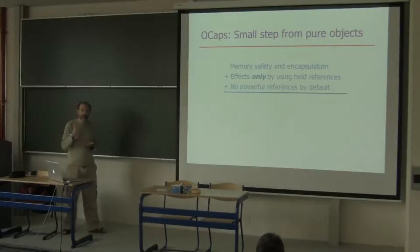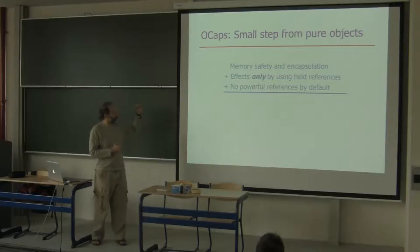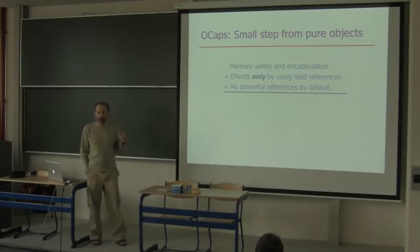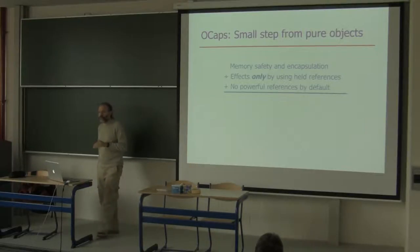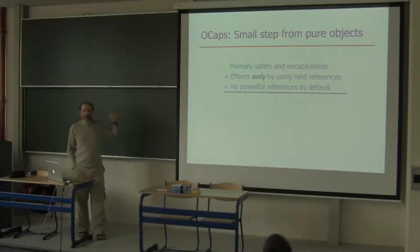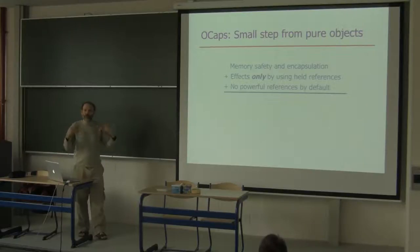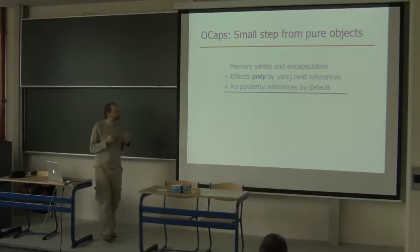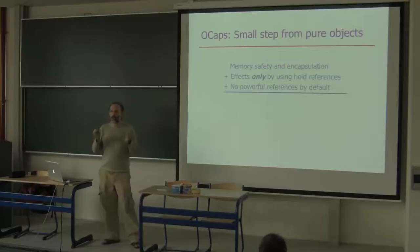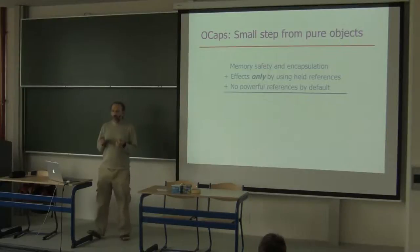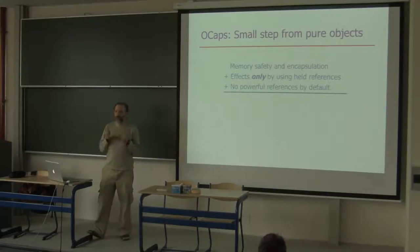To these two elements, we need only add two further restrictions to get from objects to object capabilities: first, that an object can only cause effects outside of itself by using references that it holds; and second, that an object is not given any powerful references by default. By 'powerful reference' I mean a reference through which it is enabled to cause effects.